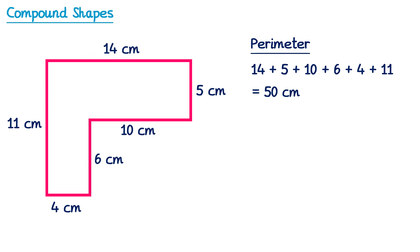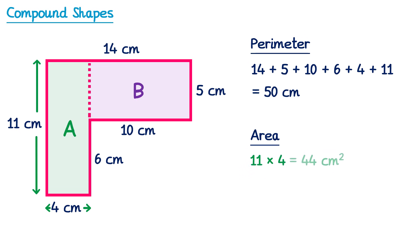We can also calculate the area in the same way we did before. Let's split the shape with a vertical dotted line. We now have two rectangles: rectangle A and rectangle B. The height of rectangle A is 11 and the width is 4. So to find its area we multiply 11 and 4, which is 44 centimeters squared.